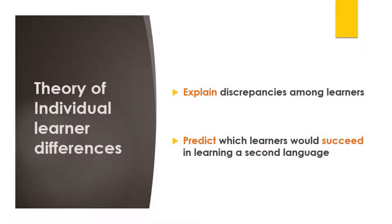In effect, second language researchers have observed that some learners learn fast, others learn slow, and others end up learning nothing at all. It seemed like there is nothing teachers can do to overcome these differences because the problem is not in the teacher, it is in the learner. The theory of individual differences has come to provide an explanation for the observed discrepancies among learners as well as provide a way to predict which learners would succeed in learning a second language.